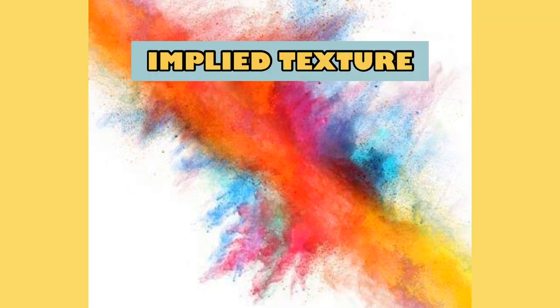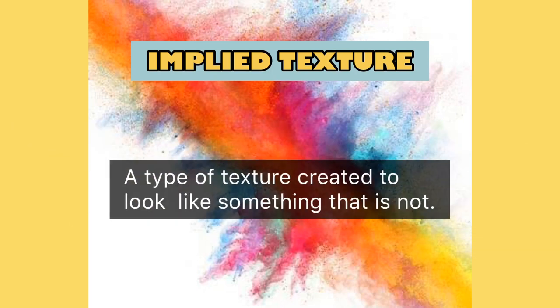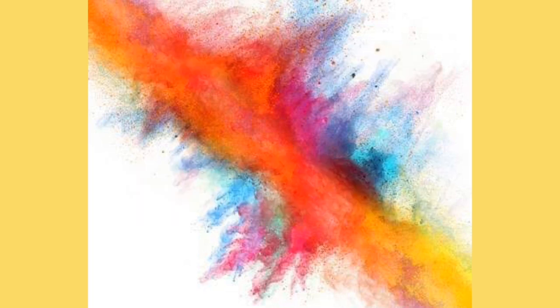Next, we have implied texture. Implied texture is a type of texture that is created to look like something that it is not.